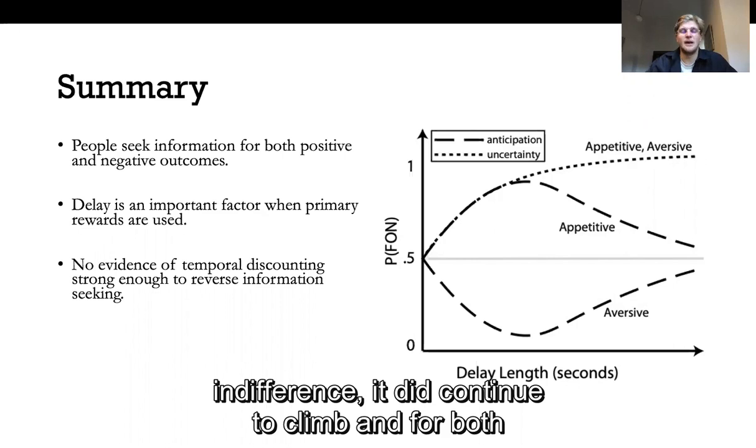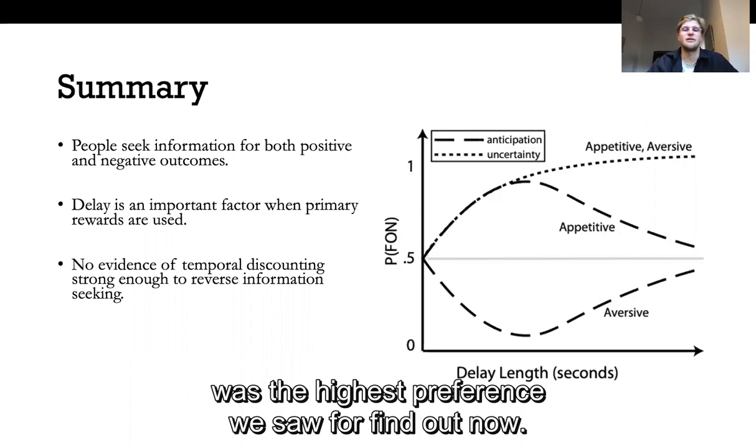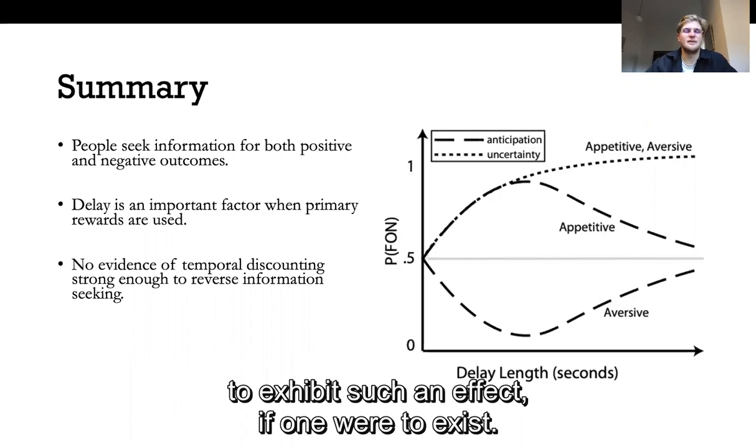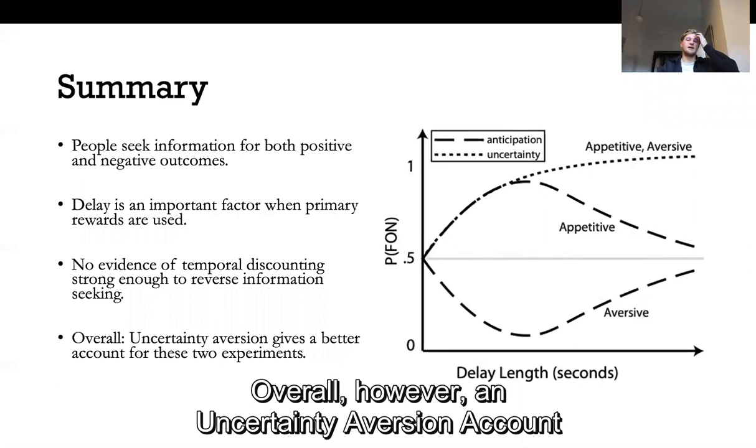We did not however find any evidence of temporal discounting at longer delay lengths. So for primary rewards while preference did flatten as it reached 40 and 80 seconds it did not show any signs of actually abating towards indifference. It did continue to climb and for both the chocolate and sound condition 80 seconds was the highest preference we saw for find out now. Perhaps a delay in the form of minutes is necessary to exhibit such an effect if one were to exist.